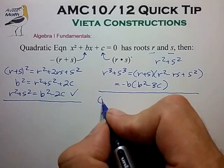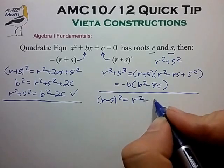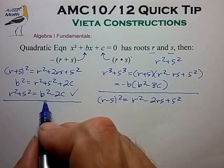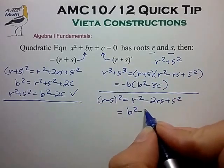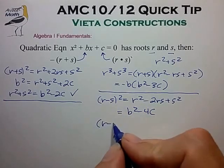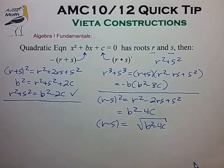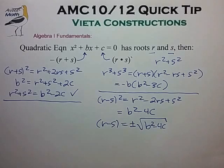Another result is to look at r minus s, squared. We can easily expand that into r squared minus 2rs plus s squared, and substitute r squared plus s squared from before. Minus 2rs is minus 2c, and this quickly equals b squared minus 4c. We can also take the square root of this expression to find that r minus s equals the square root of b squared minus 4c. This is a result you could actually find from the quadratic formula, and we have to keep the plus-minus sign in front of the square root, because we haven't specified which of the roots r and s is the larger root.